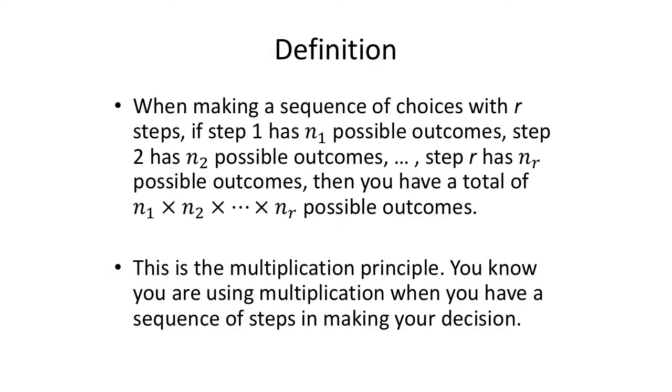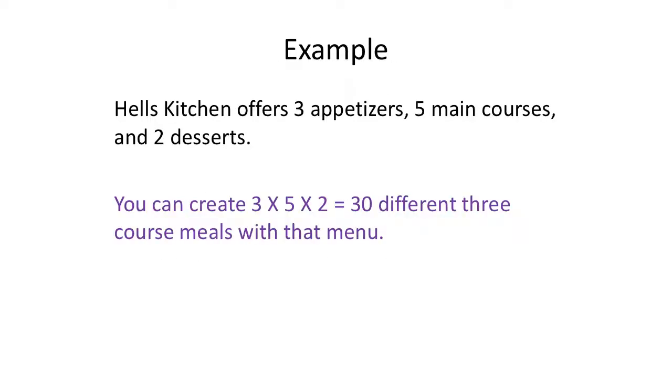All right, for example, one of my favorite shows on all of TV. I've never actually seen the menu. One day I'm going to eat there. But Hell's Kitchen, suppose they offer three appetizers, five main courses, and two desserts. All right, now you're having a three course meal. You're not just picking one thing off the menu. You're having a three course meal.